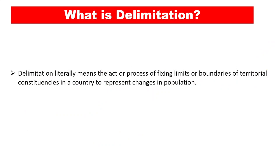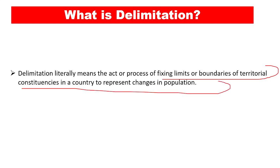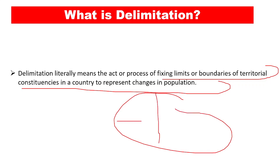Delimitation literally means the act or process of fixing limits or boundaries of territorial constituencies in a country to represent changes in the population. For example, if a hypothetical state has four constituencies and is divided into two parts, we will have only two constituencies on each side. Two constituencies may not be enough to represent that population, so we will form three constituencies. This requires readjustment of boundaries to represent changes in population over a period of time, as the population may change after ten years.